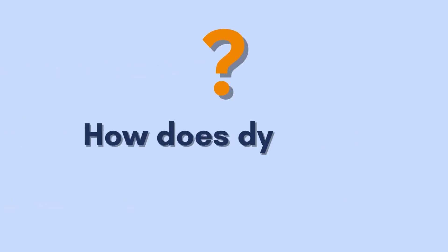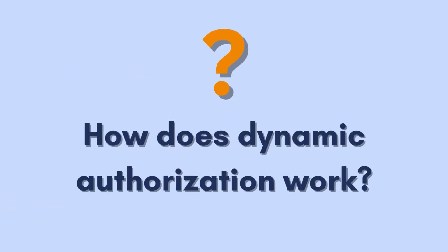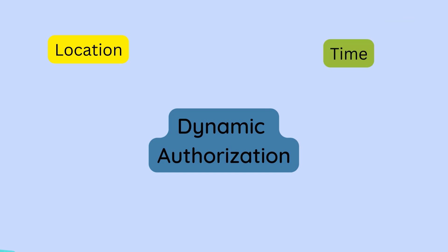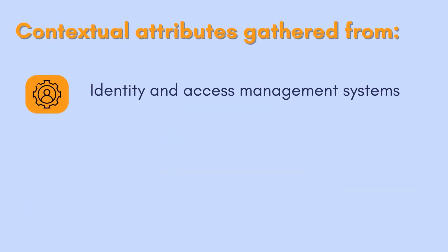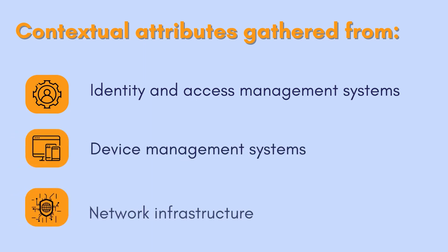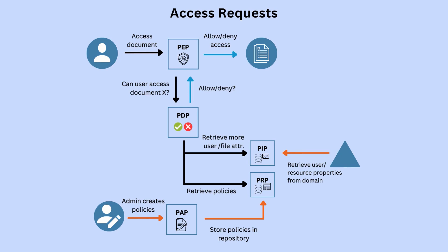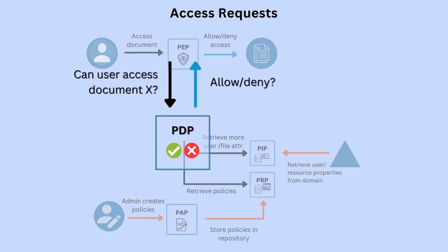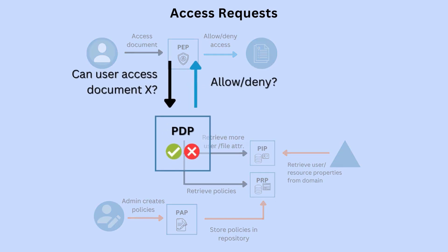How does dynamic authorization work? Dynamic authorization works by first collecting contextual attributes from various sources, such as identity and access management systems, device management systems, and network infrastructure. This information is then processed by a policy decision point (PDP), which evaluates the attributes against the set of access control policies and determines whether to grant or deny access to a particular resource.